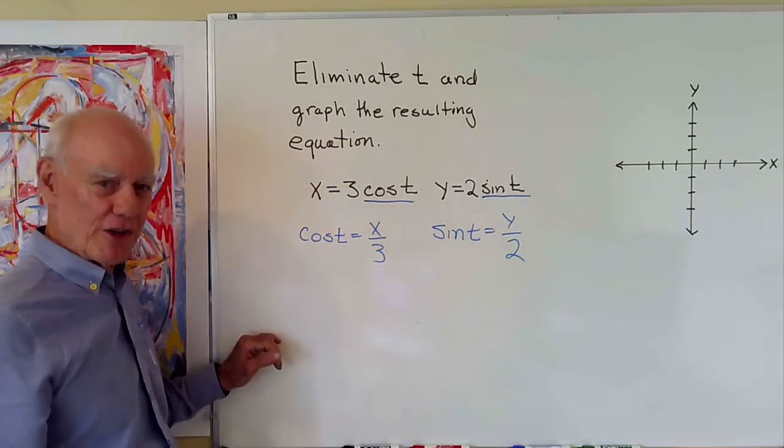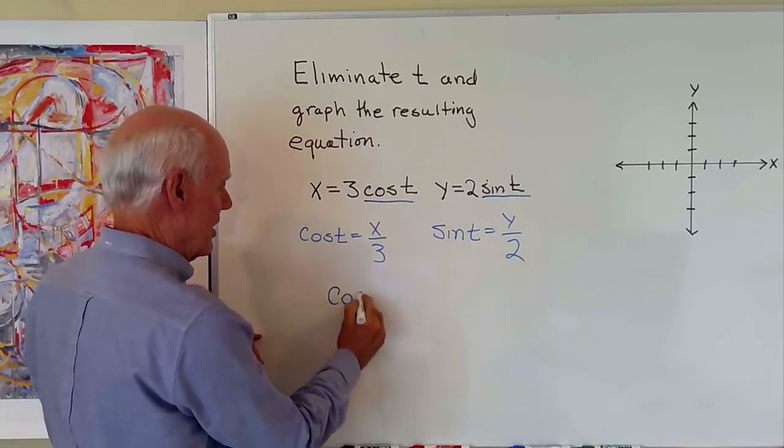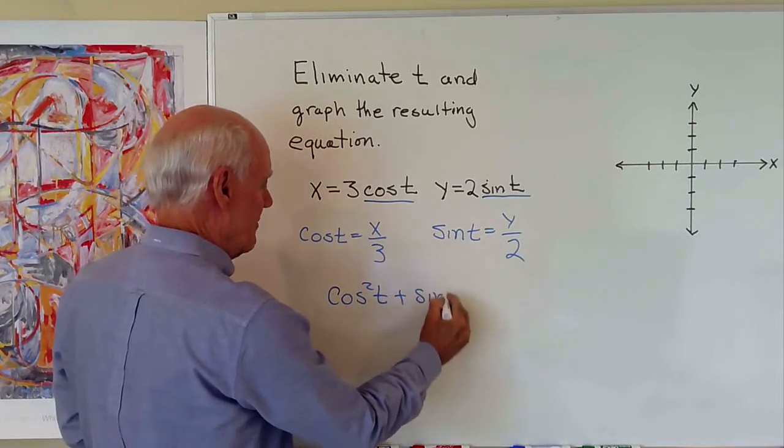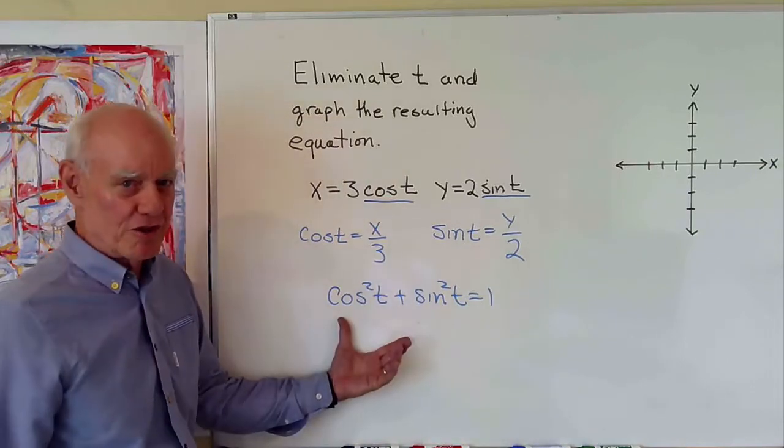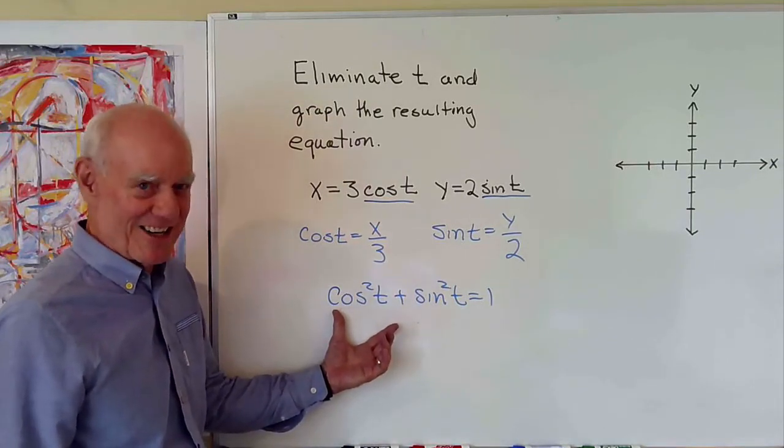Now I know that sine squared plus cosine squared is one. I want to have x first, so I'm going to say cosine squared t plus sine squared t is equal to one. That's just my Pythagorean trig identity, right?